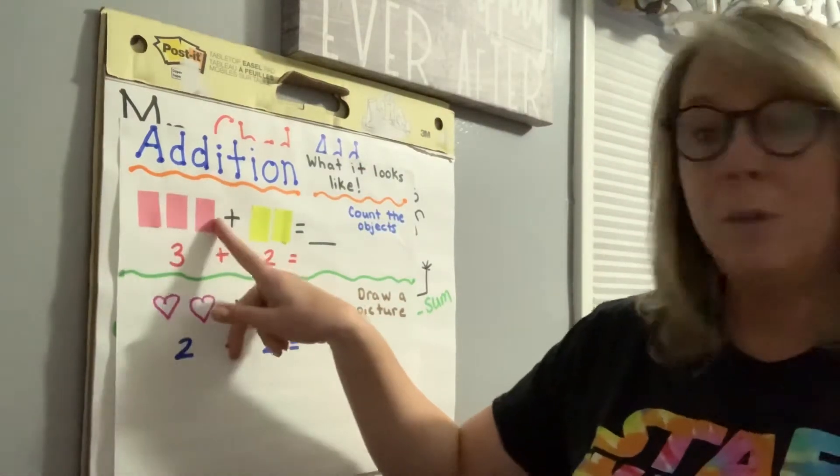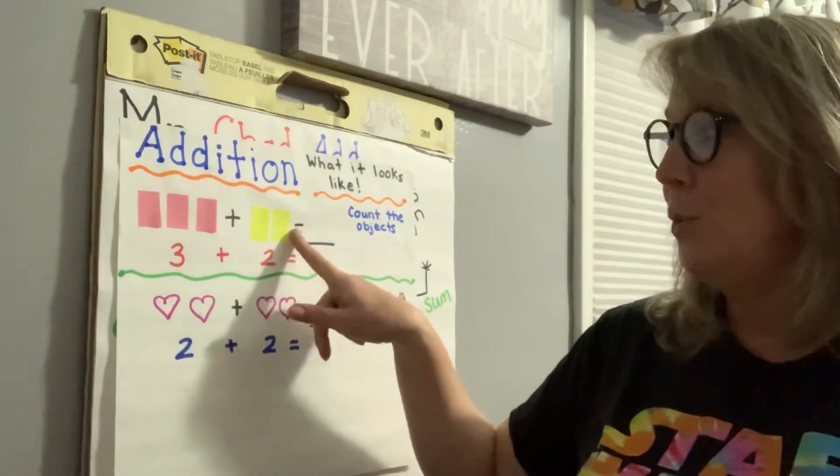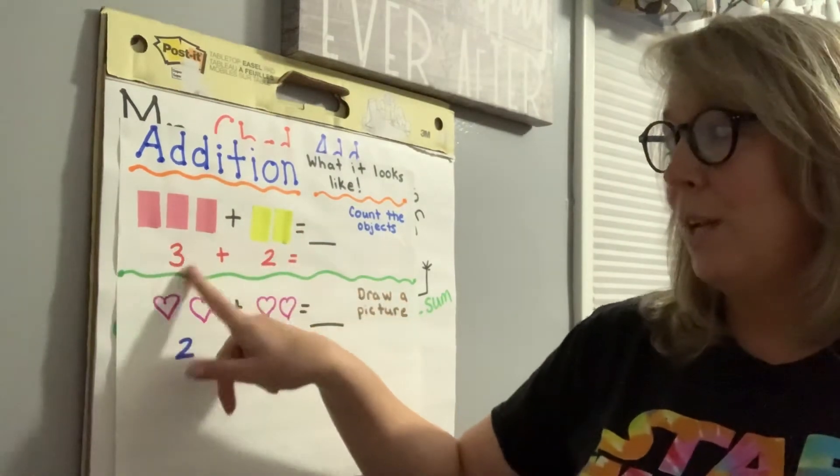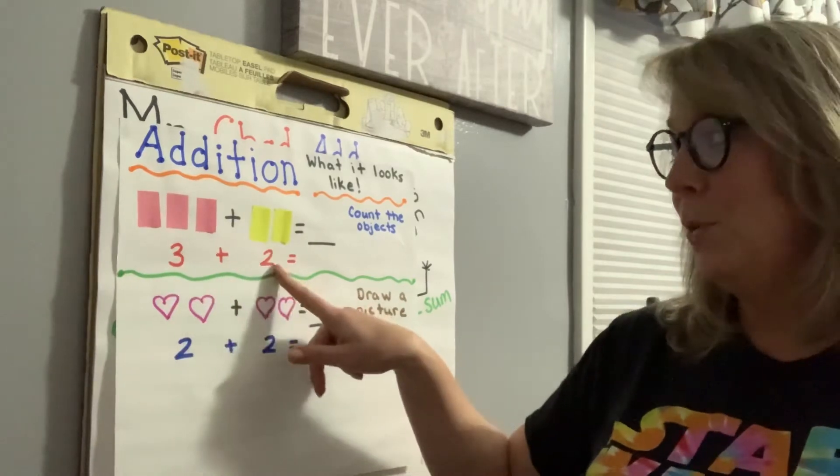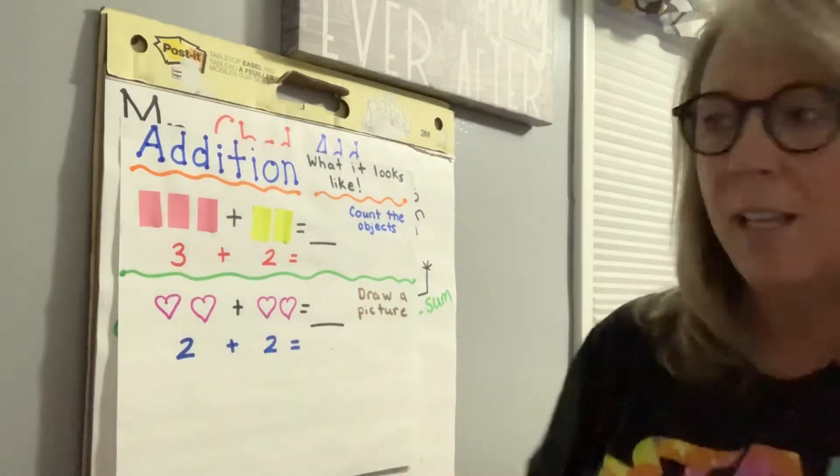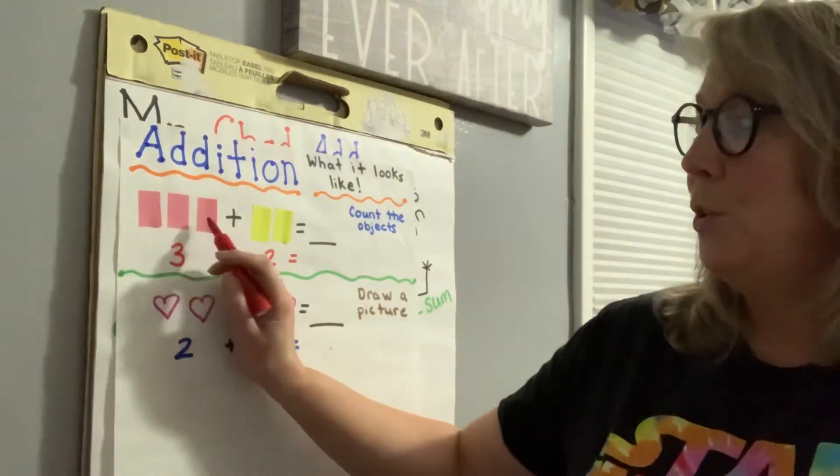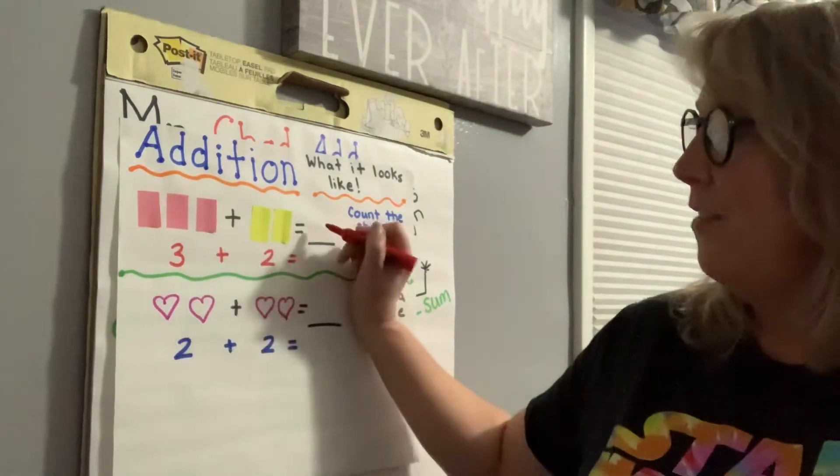This is what addition can look like. So I have one, two, three pieces of paper, right? And if I added two more, I could write three plus two, or three added to two is how many? Who knows? Let's count them: one, two, three, four, five. That would be five.